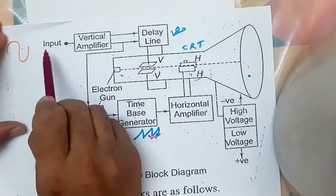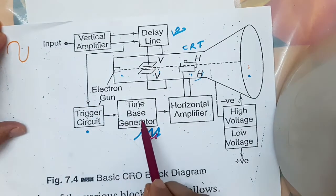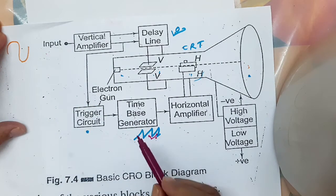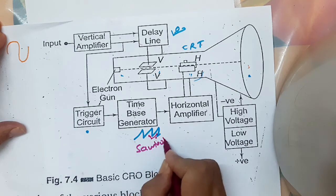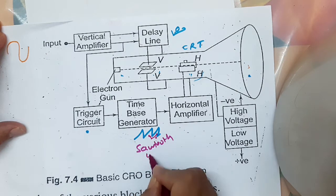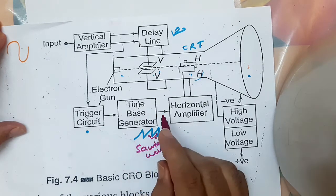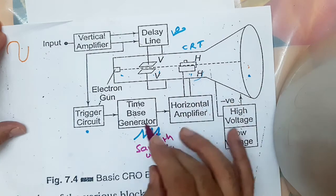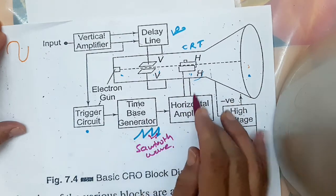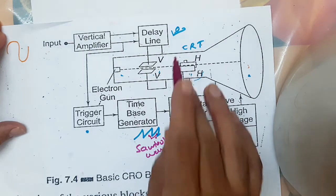Now, an unknown signal is given to the input and the time base generator. That time base generator produces the sawtooth wave to the horizontal deflecting plates. We will see why we are applying sawtooth wave to the horizontal deflecting plates.